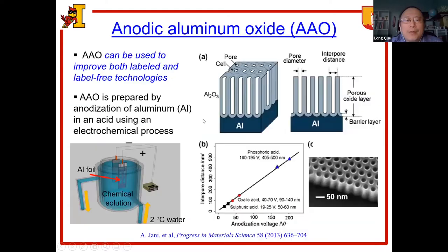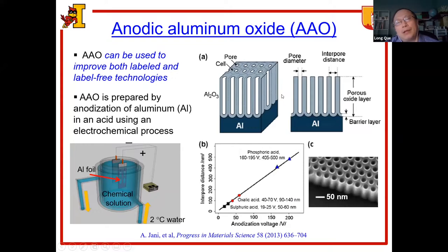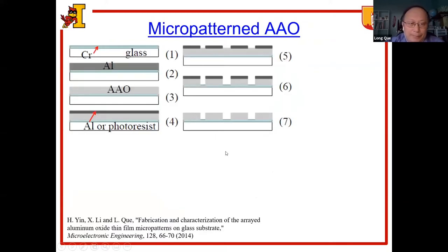The logical question is: do we have nanostructures or nanomaterials that could address the issues for both technologies? The answer is yes. One type of nanomaterial, called anodic aluminum oxide, AAO, can be used to address or mitigate the limitations of both technologies. The AAO can be fabricated by a very simple electrochemical process in a cost-effective manner, and the nanopores can be adjusted by changing the anodization parameters. We developed a fabrication process from step 1 to 7 to fabricate the micropatterned AAO on a glass substrate.